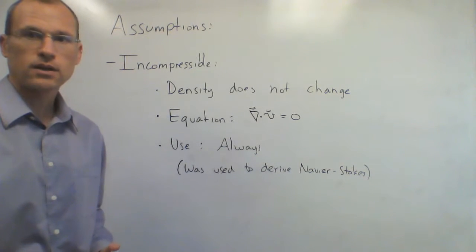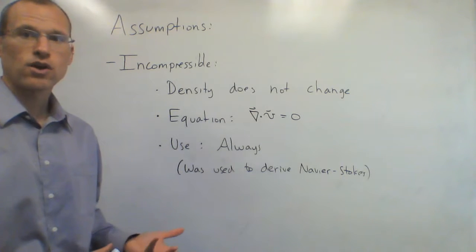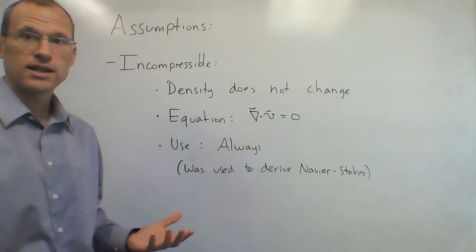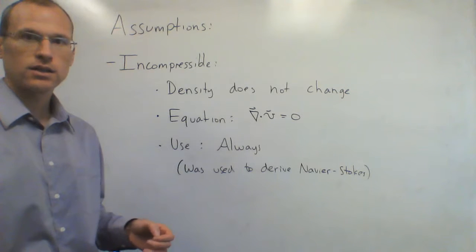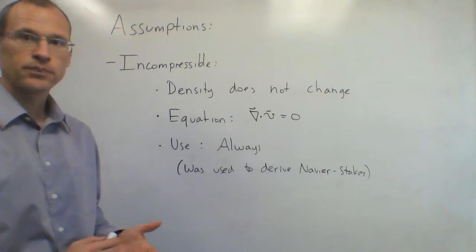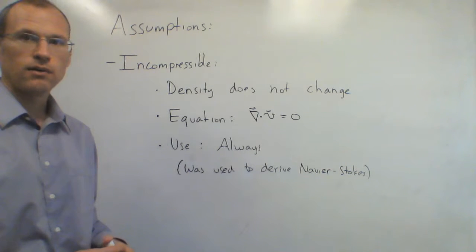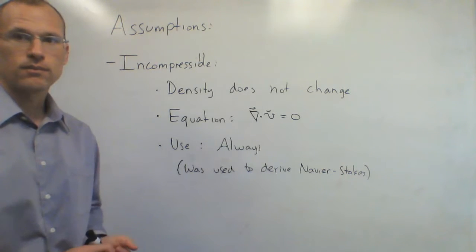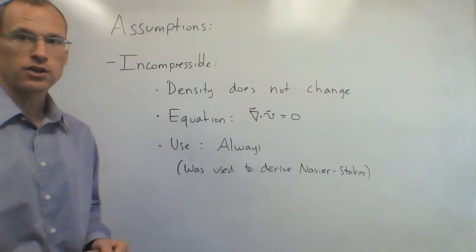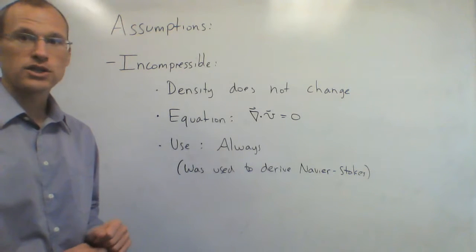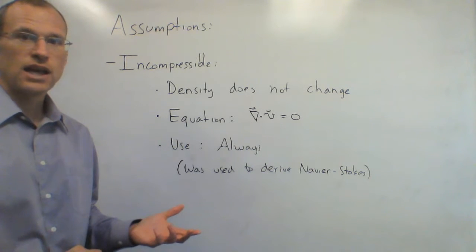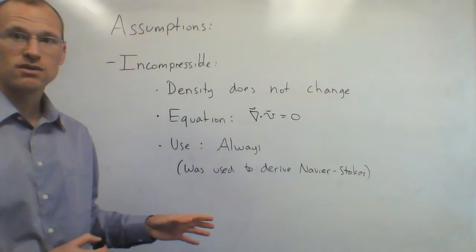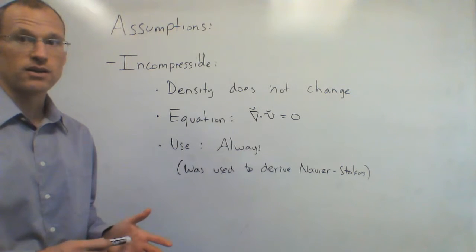The assumptions we can make are things generally stated in the problem. If the fluid is incompressible, the density doesn't change and the divergence of velocity is zero. However, we actually already used incompressibility to derive the Navier-Stokes equations, so it's already built in. It doesn't really help us simplify further at this point — it's already been applied.